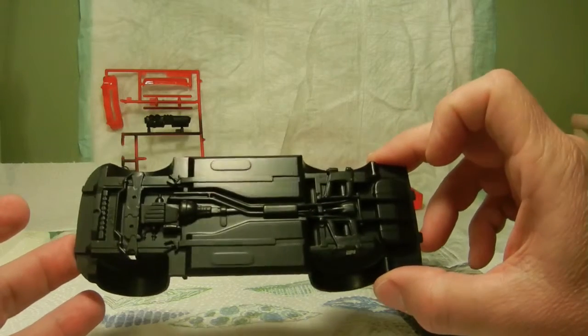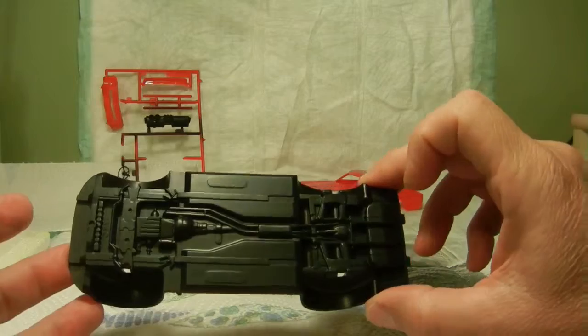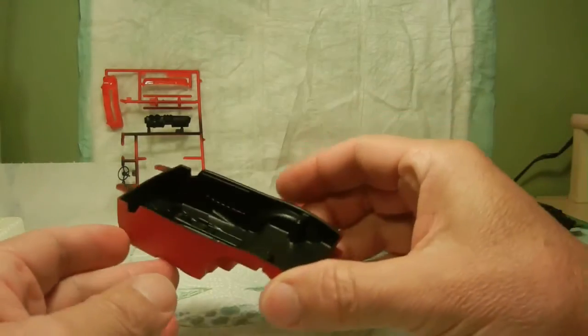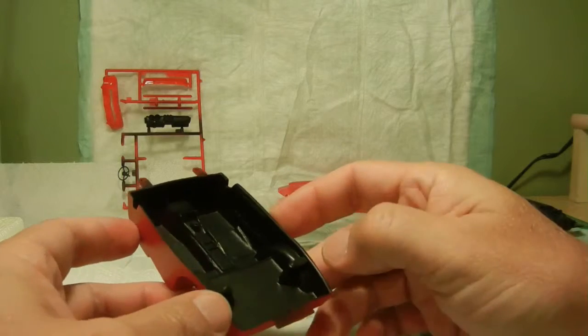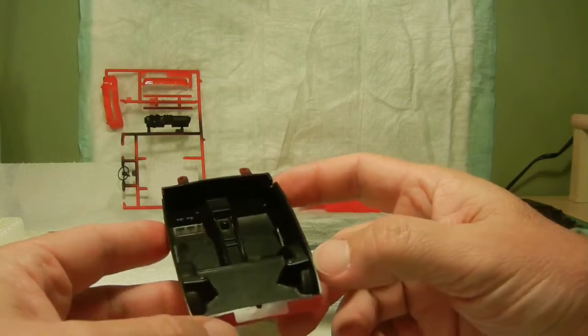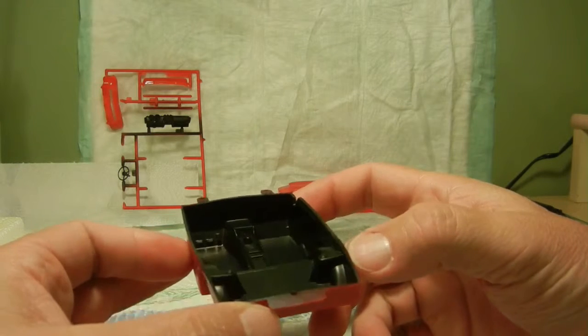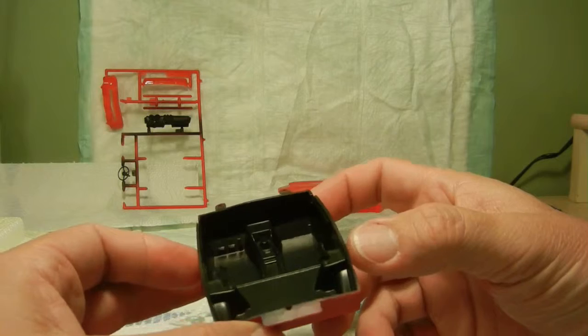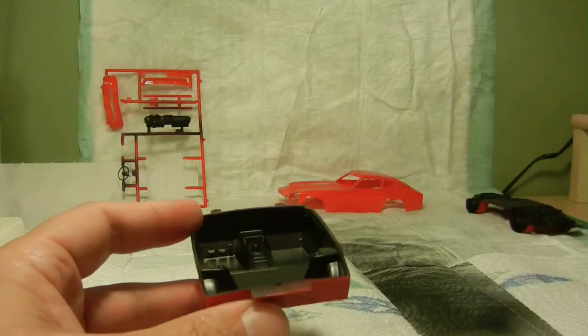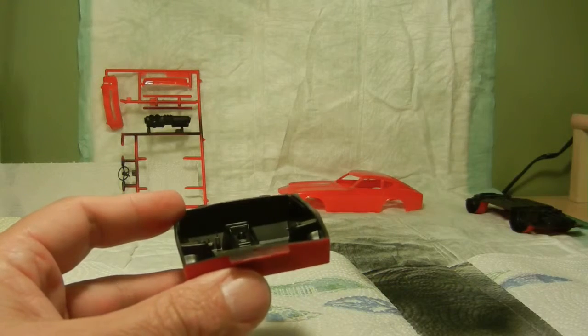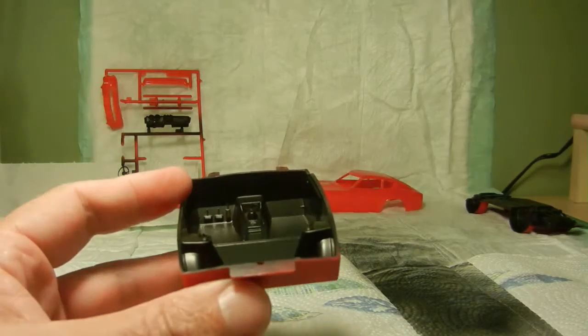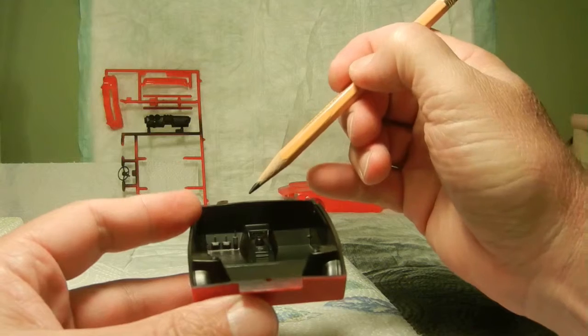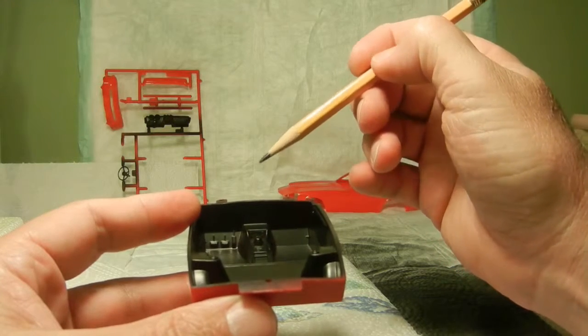That's the underside of the chassis and I went ahead with the interior of the bucket. As you can see since this is a curbside kit, not much detail.